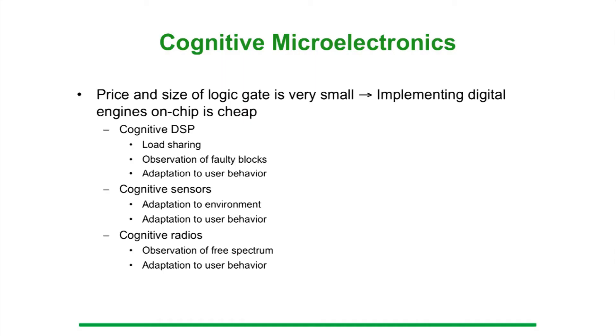Now by saying that, we can say that the price and size of a single logic gate is extremely cheap. So it means that we can quite easily include digital engines on chip. For instance we can put cognitive features on the microelectronics that we are designing - it can be a cognitive digital processor. For instance we are trying to share the load in the processor depending where it's needed. It can observe which blocks of the processor are not operating as they're supposed to do - typically part of the memory that you have in your device is faulty. So it can observe this and it can also adapt to the behavior of the user.